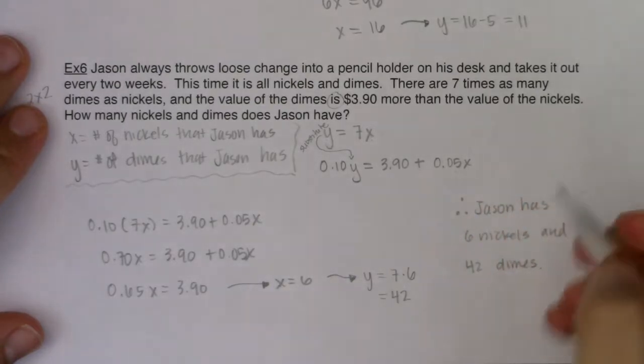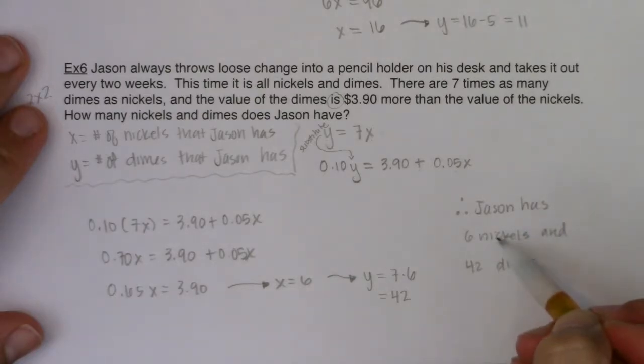Alright, and let's just check our equations. Does he have 7 times as many dimes as nickels? Yep, that's true. Let's think about how much money he has with the dimes. He has $4.20 here.